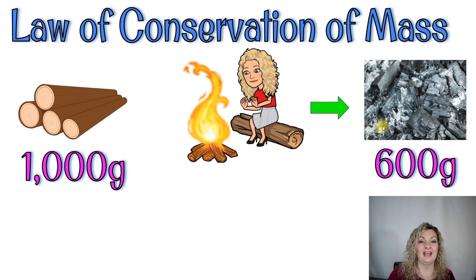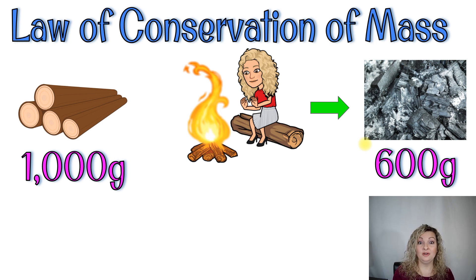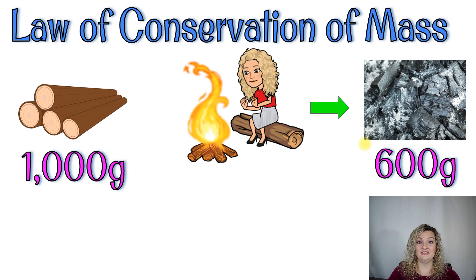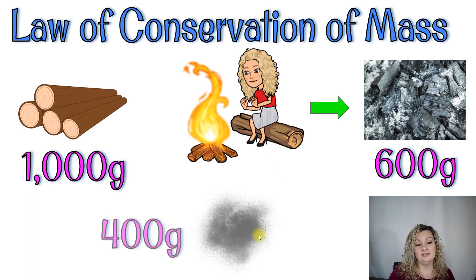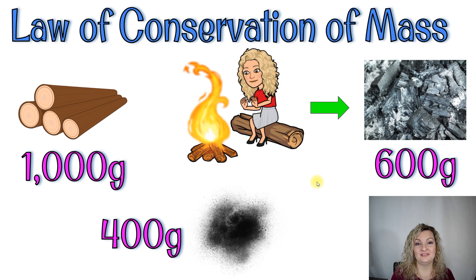When we took the mass of the ash and soot, it was only 600 grams — we're missing 400 grams. That does not seem to support the law of conservation of mass, so we have to figure out where those other 400 grams went. A lot of it went up into the air — into the system around it. That's going to be the gases that were produced and the ash and soot that went up into the air as very small particles, accounting for the other 400 grams. If you were to capture all of it, the 600 plus the 400 would equal 1,000 and it would perfectly support the law of conservation of mass.